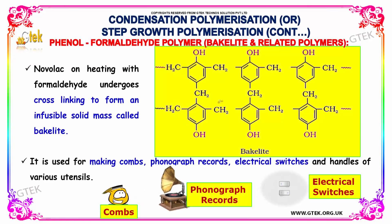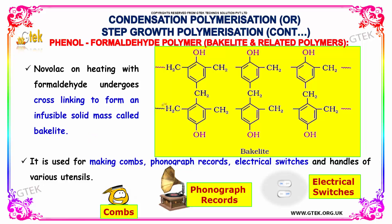Novalac on heating with formaldehyde undergoes cross linking to form an infusible solid mass called Bakelite. Bakelite is generally used for making combs, phonograph records, electrical switches, and handles of various utensils.